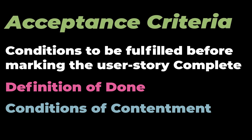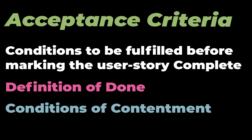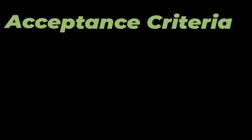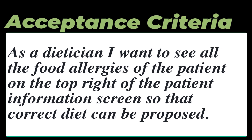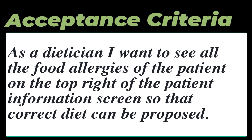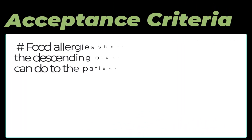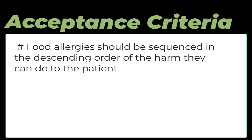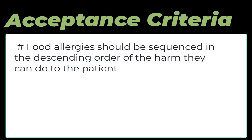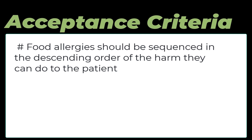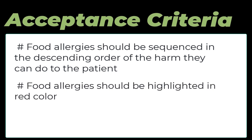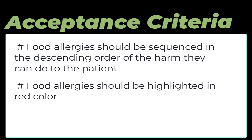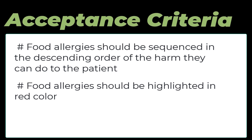Confirmation or acceptance criteria should always be a part of a user story. Looking into the previous example, the possible acceptance criteria for this user story could be: firstly, the food allergies should be sequenced in a descending order of the harm they can do to the patient; second, the food allergies should be highlighted in red color. And there can be many more.